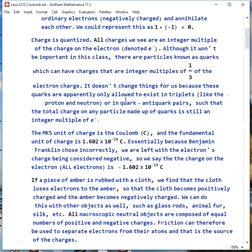This doesn't change anything for us because apparently the only way quarks exist is in triplets or in quark-antiquark pairs, such that the total charge on any particle made up of quarks is still an integer multiple of the electron charge.